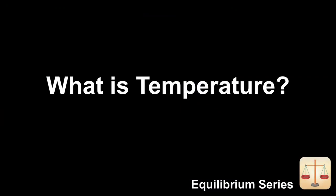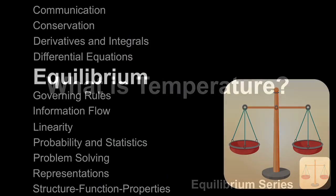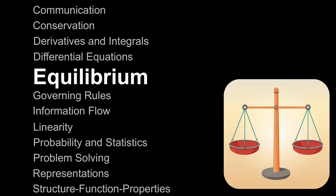This video is part of the equilibrium video series. It is often important to determine whether or not a system is at equilibrium. To do this, we must understand how a system's equilibrium state is constrained by its boundary and surroundings.